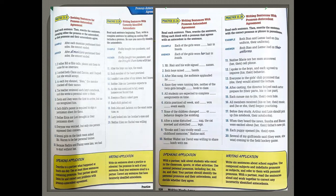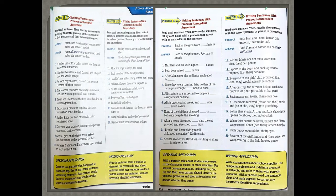Now look at exercise 23.2B, sentence number 16: 'All members received his or her / their music.' Since it is 'all' and 'members,' the answer is 'their.' And continuing the sentence: 'and he or she / they began practicing' — the answer is 'they.' Exactly, because it is 'all' and 'members.' Very good — I think you're almost familiar with everything now.